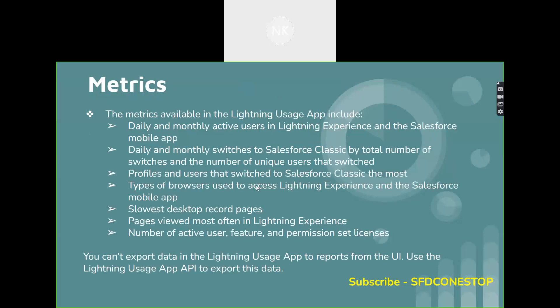We will talk about metrics in a while, but before we get into the metrics let's understand the main purpose of the app. Whenever we roll out the migration — that is from Classic to Lightning — we ask the users to switch to Lightning. It is always important that we know how our users are interacting with the Lightning Experience and see what improvements can be made that add value to the users. That is the most important thing, and whenever any changes like switching from Classic to Lightning happen,